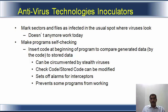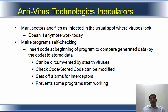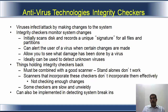Inoculators make programs self-checking — they insert a code at the beginning of the program to compare the generated data to stored data, that is before and after execution. It can be circumvented by stealth viruses — that is one of the downfalls. Check code or stored code can be modified. It sets off alarms for the interceptors and also prevents some programs from working. These are the downfalls of the inoculators.